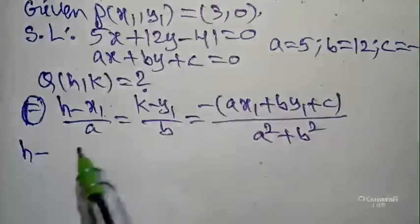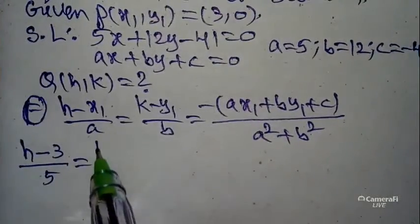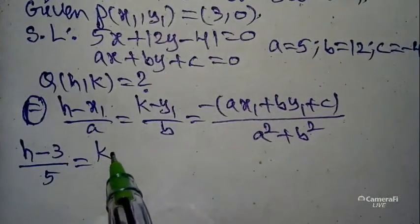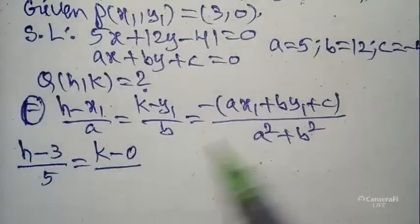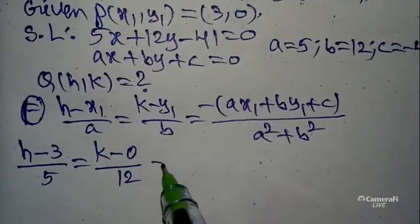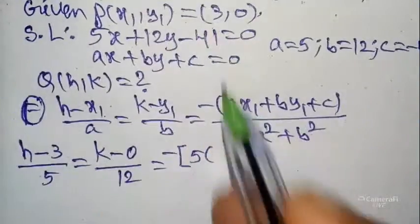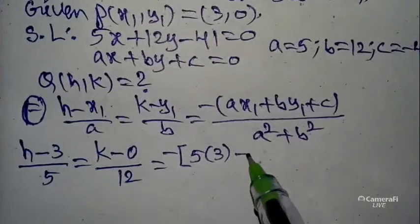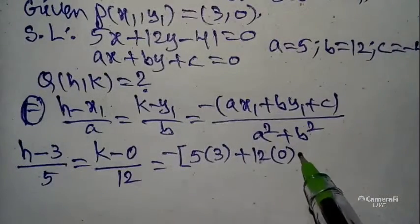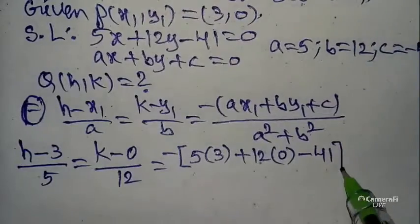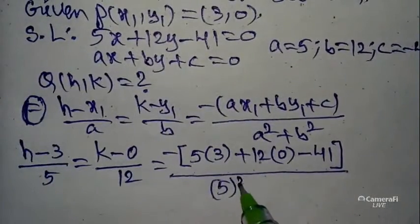Substituting all values: h is unknown, x₁ = 3, a = 5; k is unknown, y₁ = 0, b = 12. The right-hand side: minus of (a·x₁ + b·y₁ + c) = minus of (5×3 + 12×0 − 41), divided by a² + b² = 5² + 12².